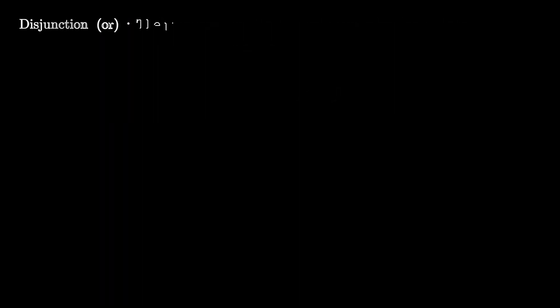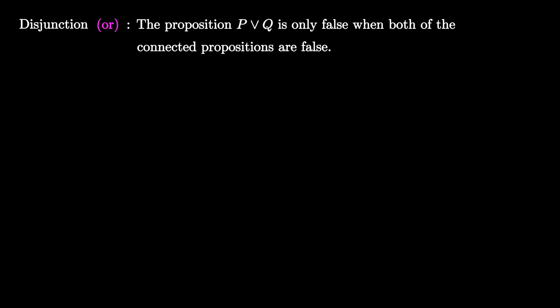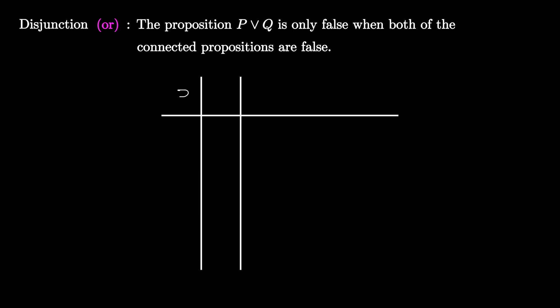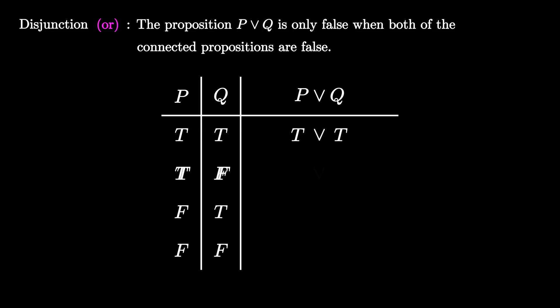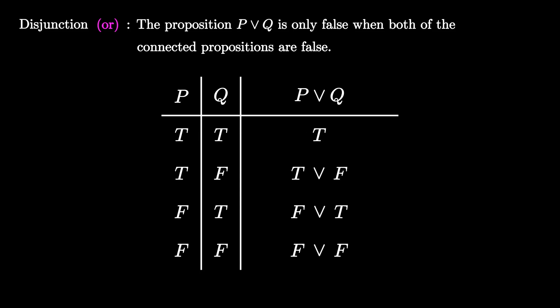Just like the AND connective, the disjunction, or the OR connective, is a binary connective. The proposition P OR Q is only false when both of the connected propositions are false. To build the truth table, we again use two columns for P and Q and a third column for P OR Q. There are four different possibilities. Going row by row: true or true, true or false, false or true, and false or false — the only way this is false is if both are false, which only happens in the final row. So the truth table for P OR Q is TTTF.